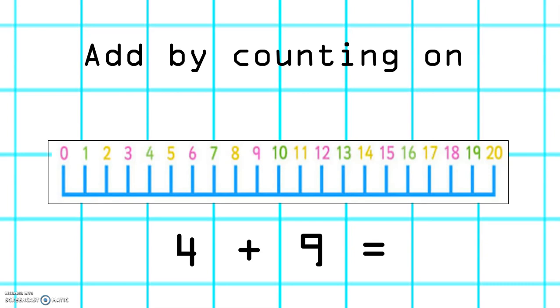Let's try this one. 4 add 9. The biggest number is 9, so that's where we're going to start on our number line. And we're going to count on 4. 1, 2, 3, 4. The number that we land on is 13. So 4 plus 9 equals 13.